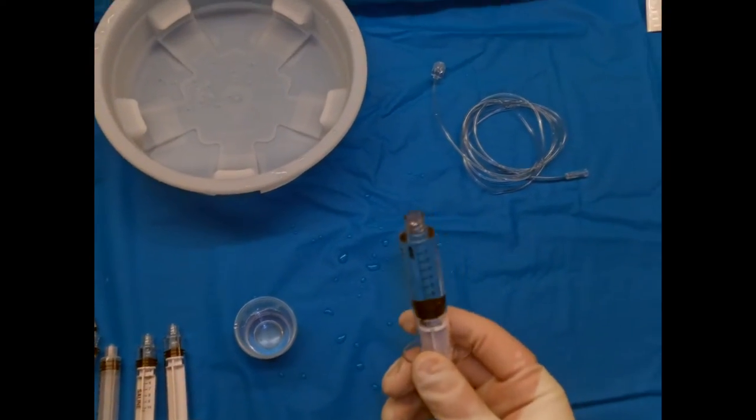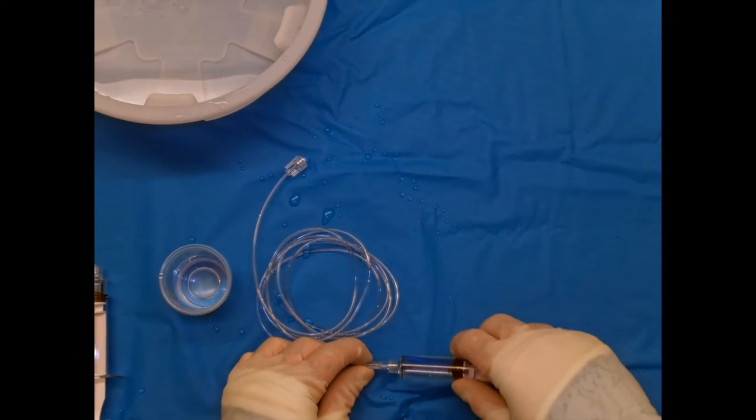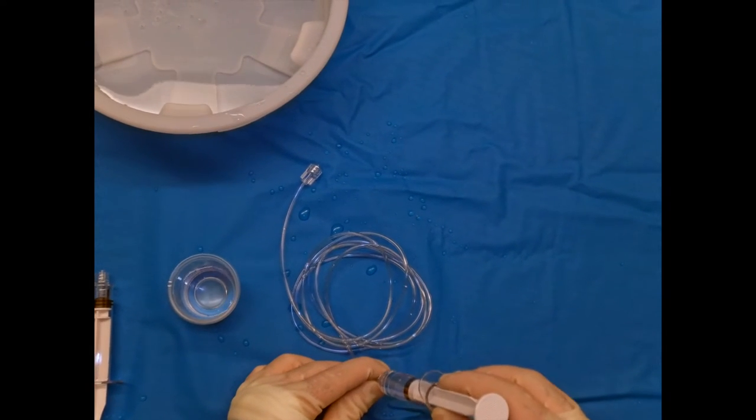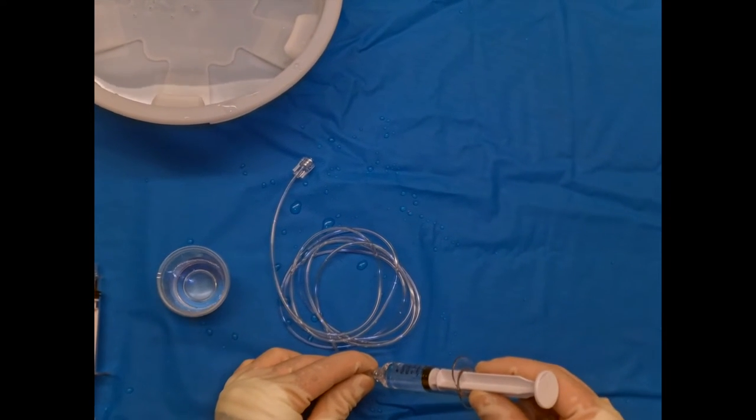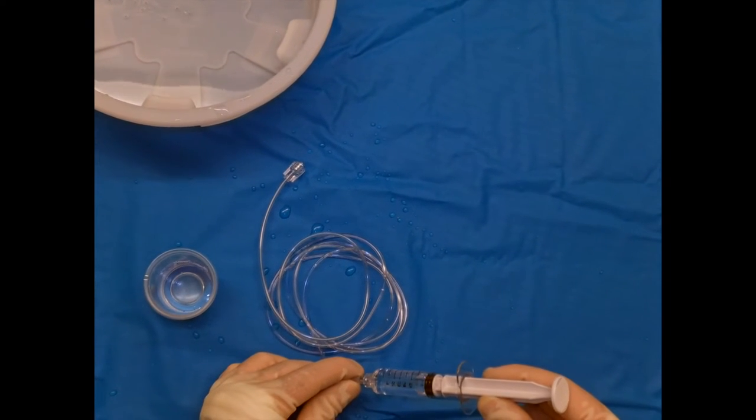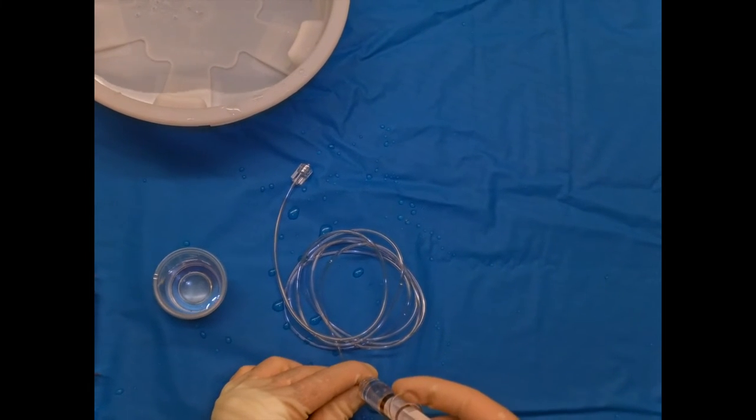Now when we hook this up to another line, what we can do is we'll now again face the back of the syringe up. As we pull back—I'll just show you, I'll tilt it for a bit—we pull the air out of the system, and then we can inject again in.